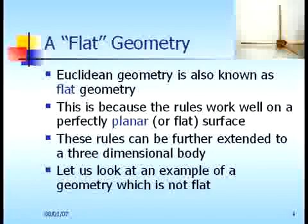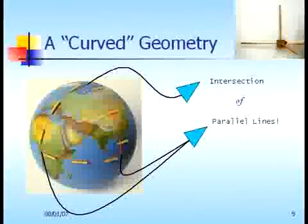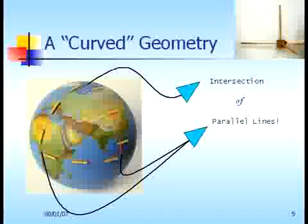Euclidean geometry is known as a flat geometry because the rules work well on a perfectly planar or flat surface. These rules can be further extended to a three-dimensional body. To understand what it means to say a planar or flat surface, let's look at something which is not flat — a curved geometry like the surface of the earth. When we use a reference frame like the surface of the earth and take points on it, we notice that in this reference system the parallel lines intersect, joining up at the north pole, which is the common point for both lines.